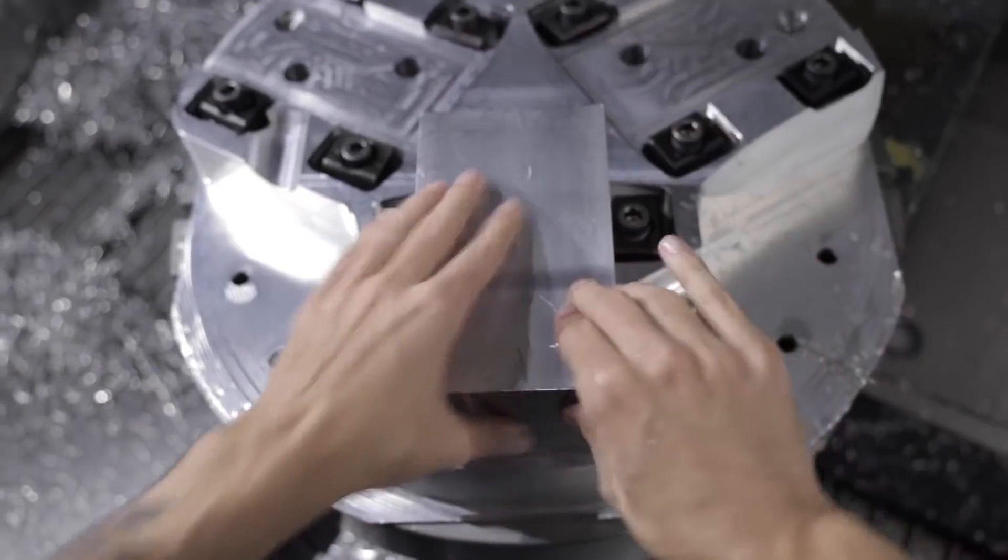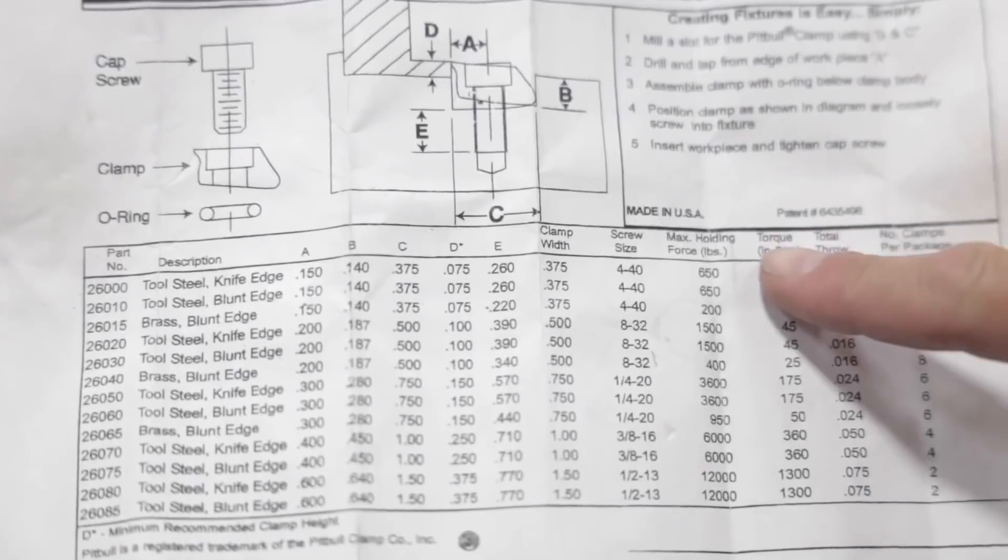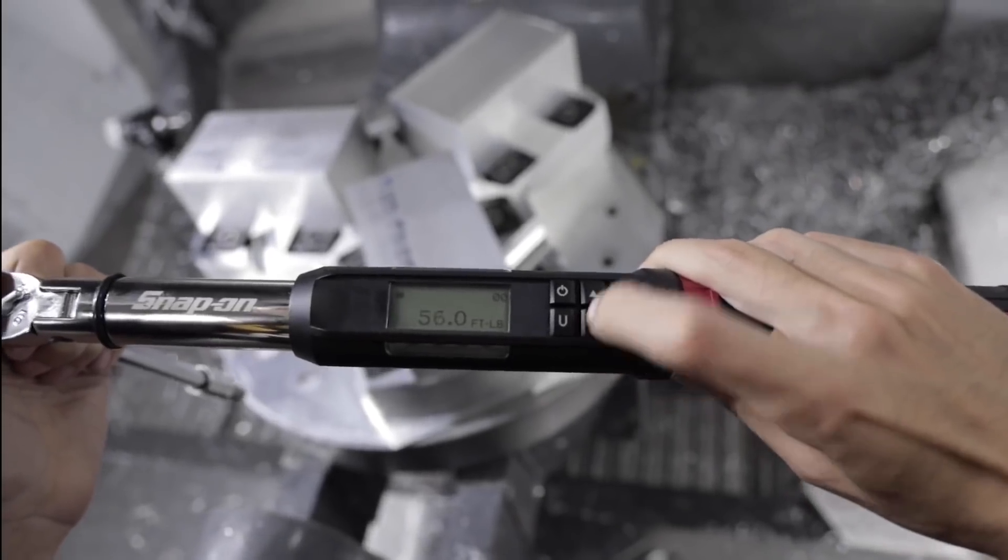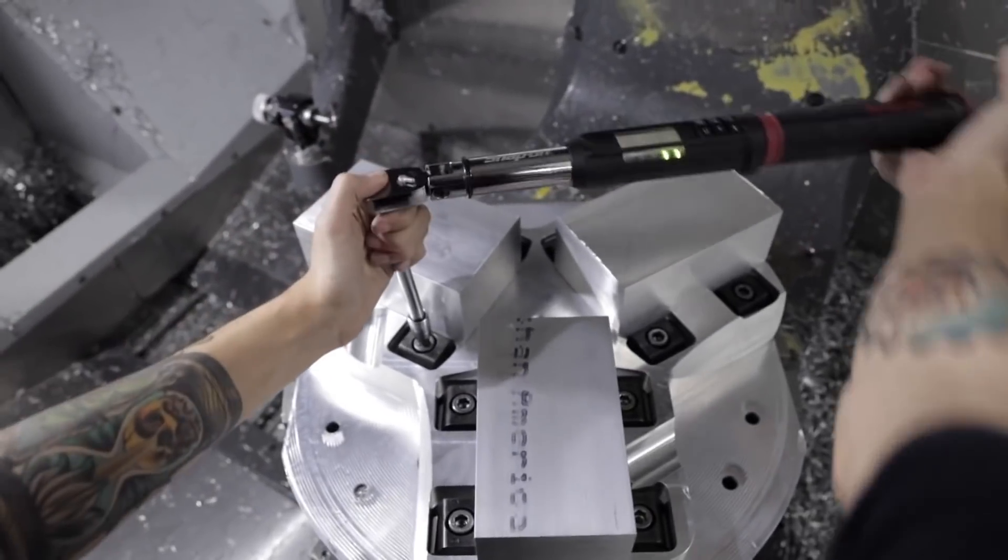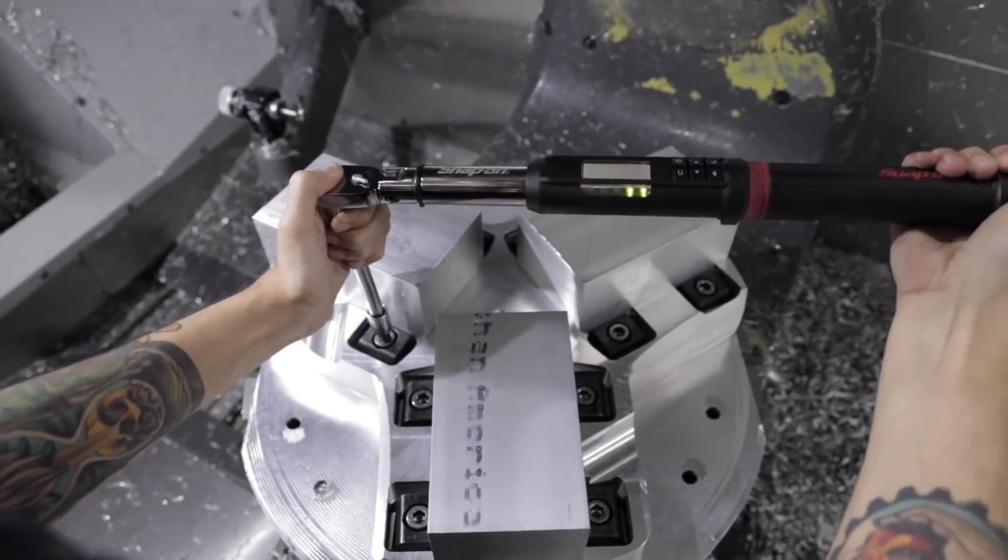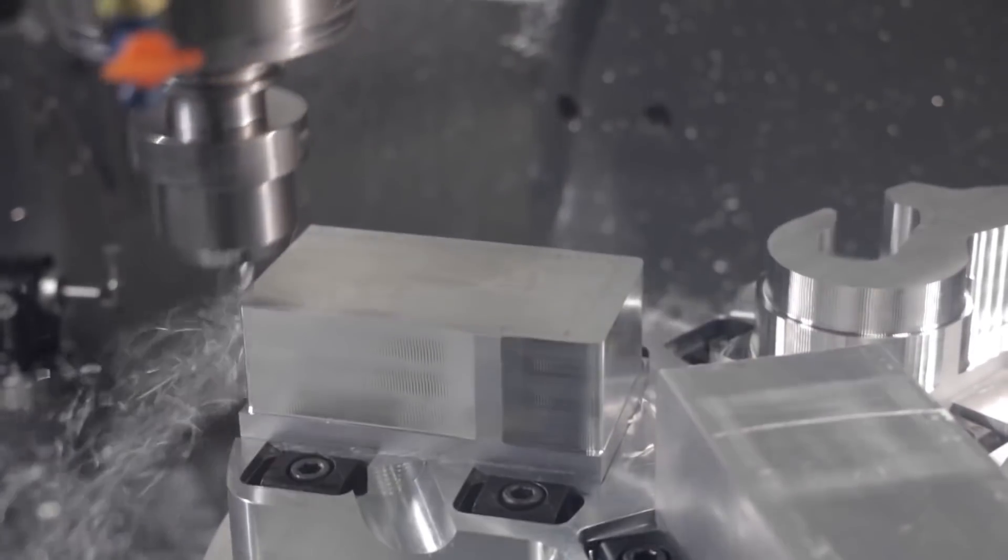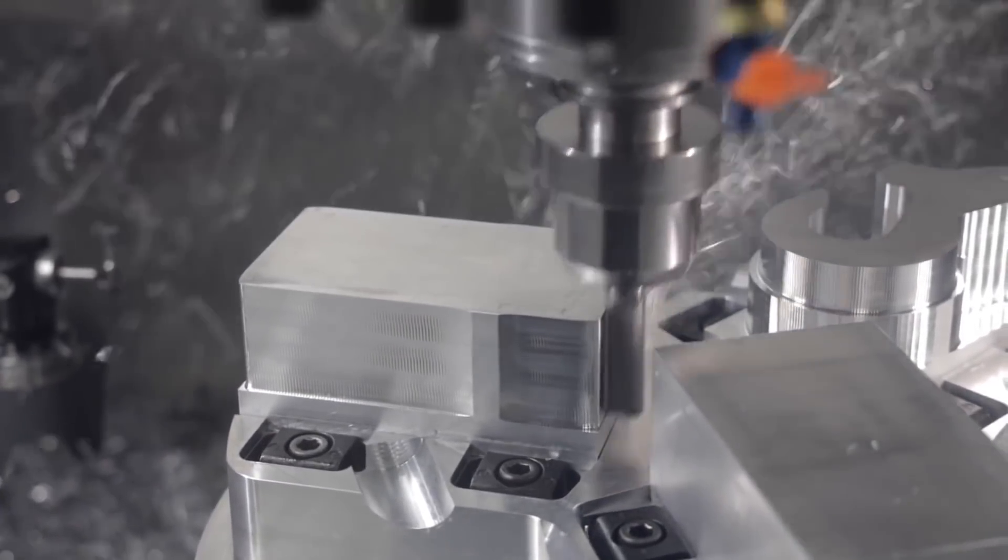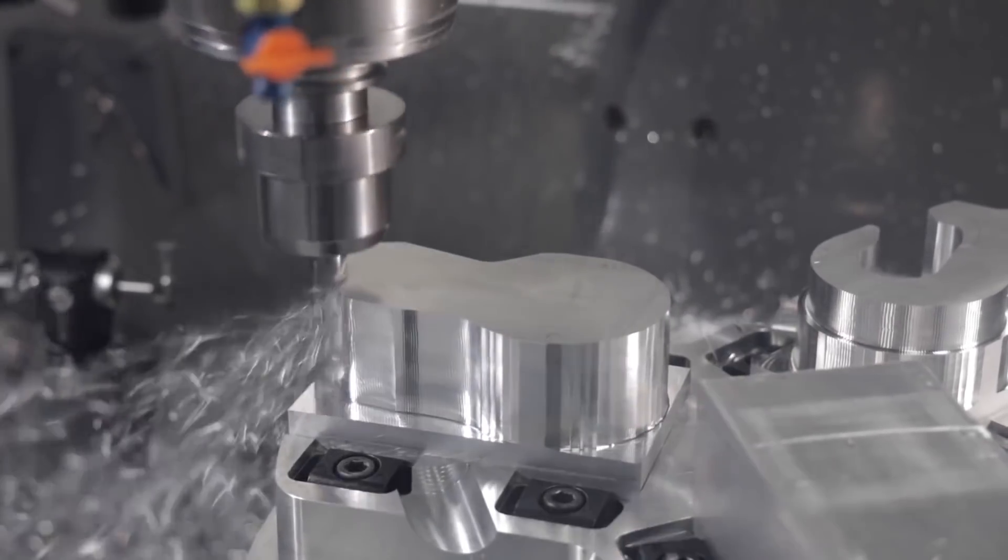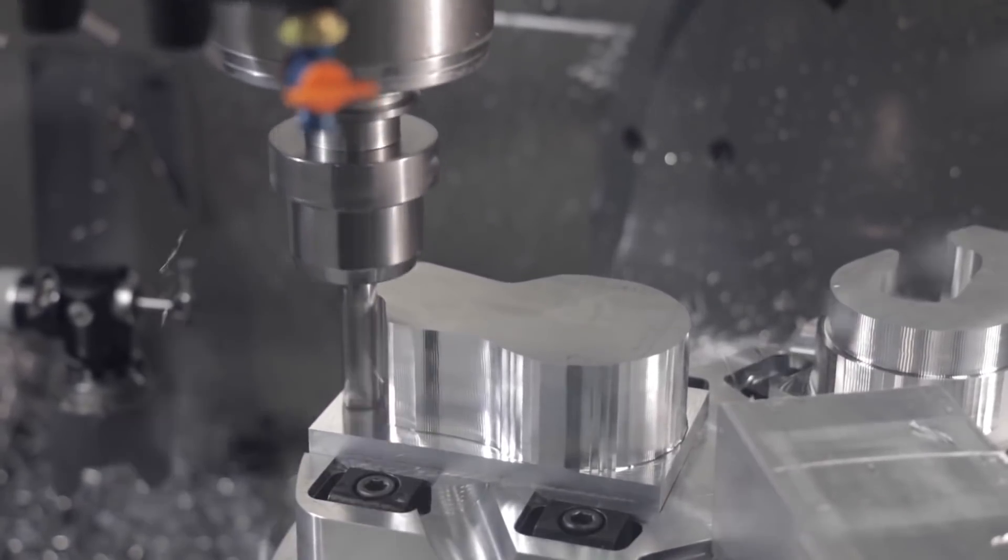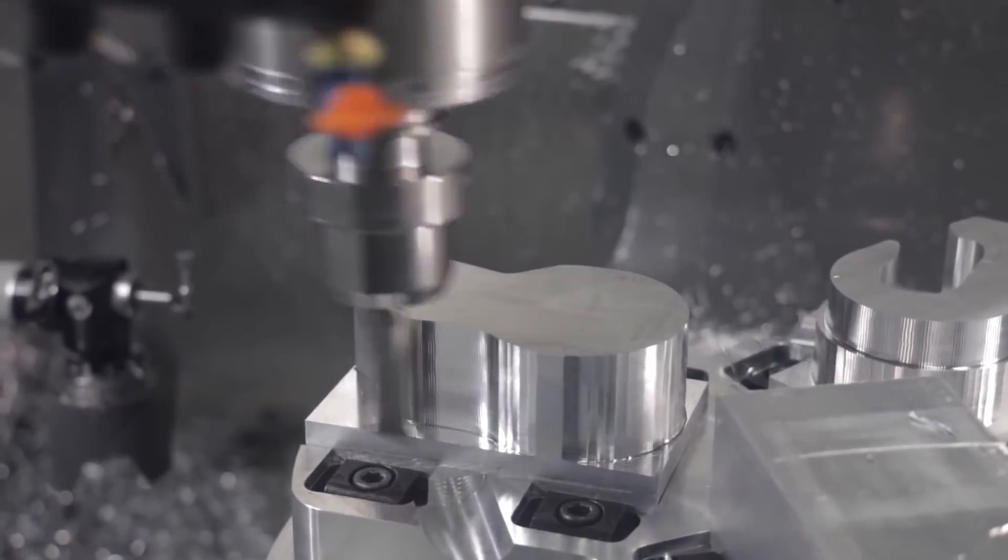It's very important if you're getting into anodizing your parts that you get educated on this. When you look at Type 3, per surface the thickness will be five tenths up to maybe three thousandths. Now again, you have a certain amount that's inside the material and a certain amount that's outside the material.